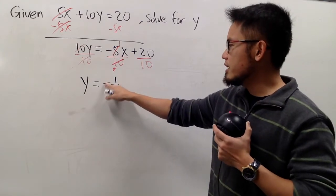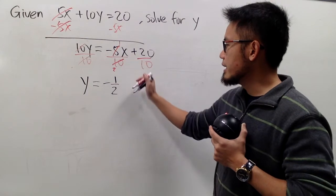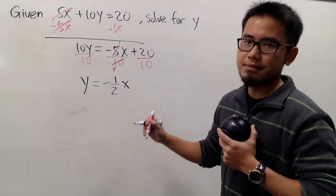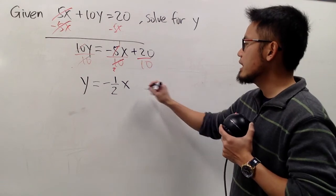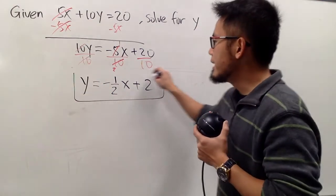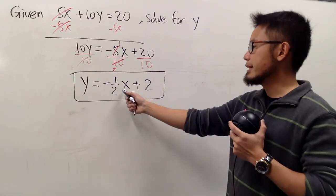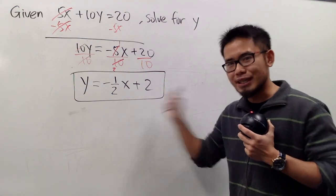And you should put a negative either on the top or in the front, doesn't matter, okay? And then let's put down the x on the side, like that. And lastly here, we have 20 divided by 10, and that's just plus 2, like that. And this is it. y is equal to negative 1 half times x plus 2. That's it.